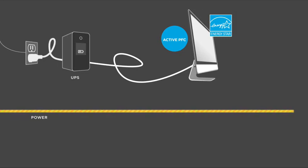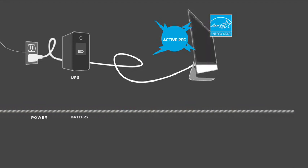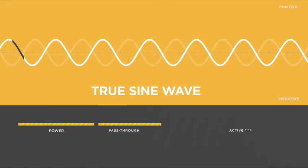When it receives direct utility power or pass-through power, equipment that uses an active PFC circuit will function as it should. When it receives power from a backup battery, however, it may not work correctly. Here's why: